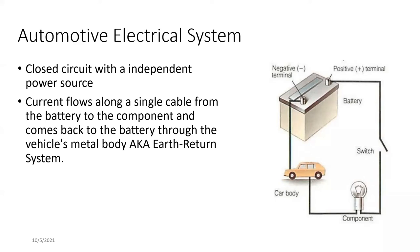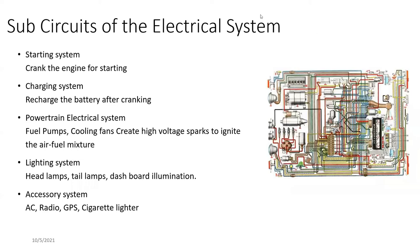By using earth return, you can eliminate the use of extra wires. This reduces weight, especially considering how many electrical components are included in a vehicle nowadays. It also reduces cost. That's why the earth return system is used in modern vehicles. Modern electrical vehicle systems are very complicated — somewhat similar to what you can see here. It's comprised of a lot of other small sub-circuits that together become the main electrical system.